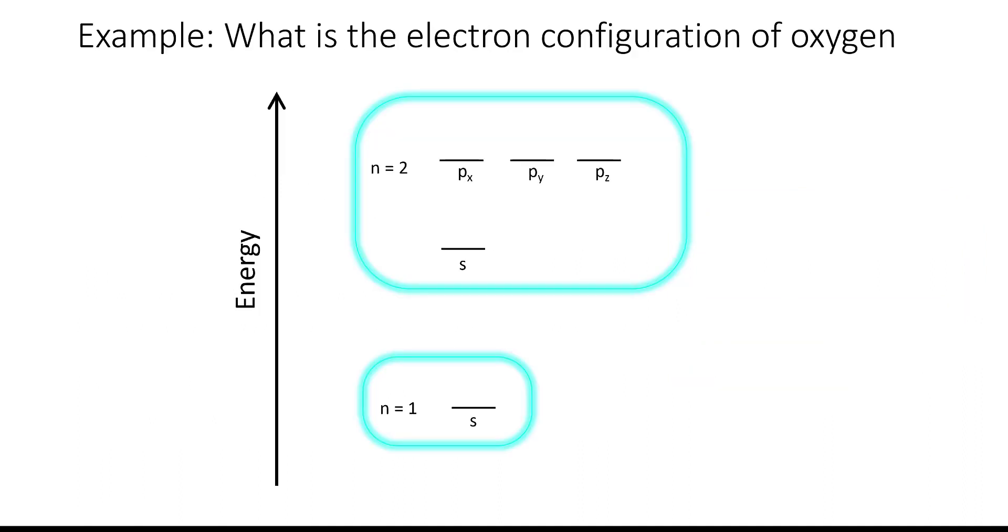Let's take a look at an example of the electron configuration of oxygen. Oxygen, as we know from the periodic table, has eight electrons, so we have to start filling them in starting from the lowest orbital. First, we're going to put two electrons into the 1s orbital. And remember that they have to be spin paired in order to be in the same orbital.